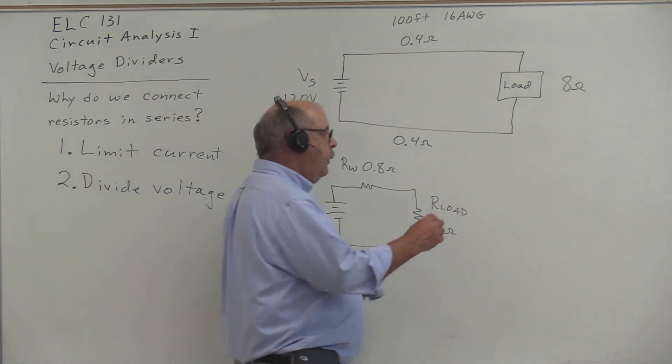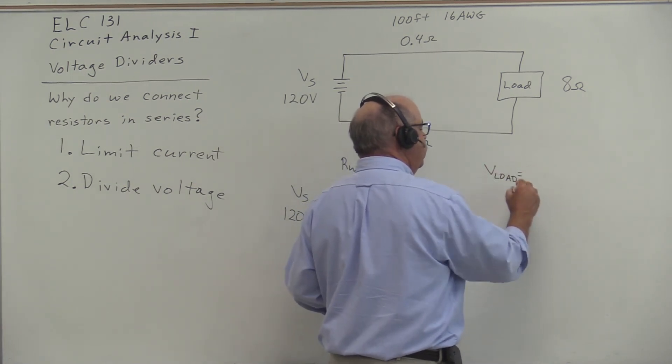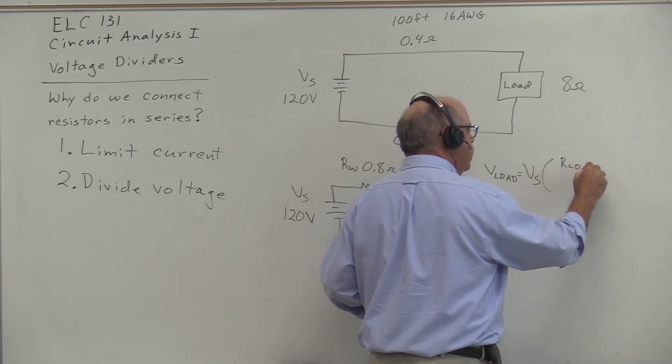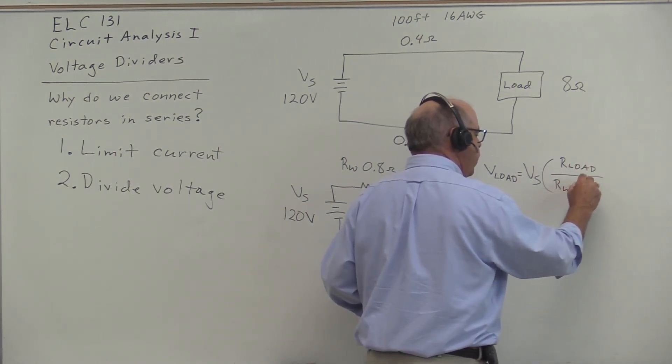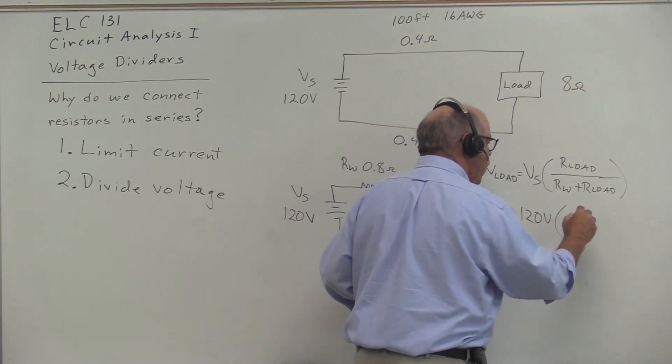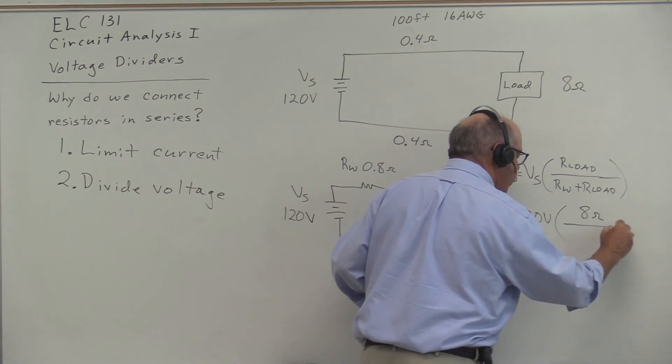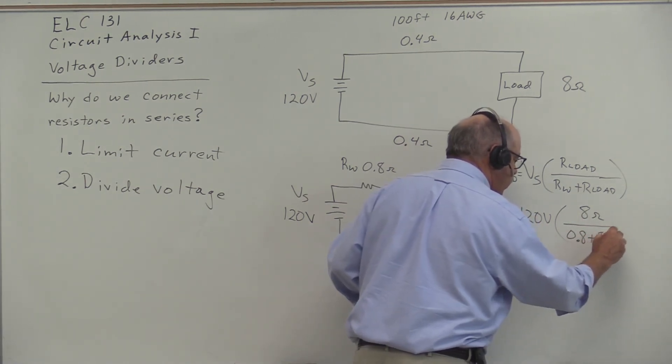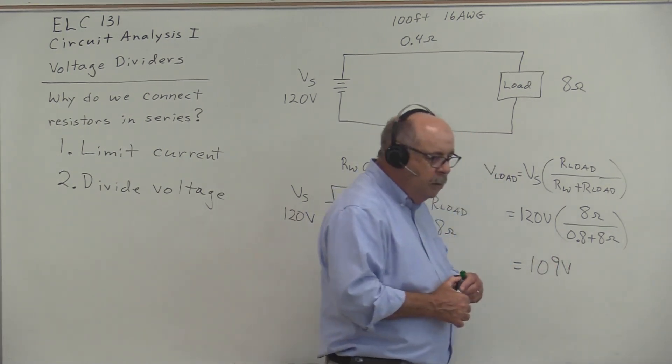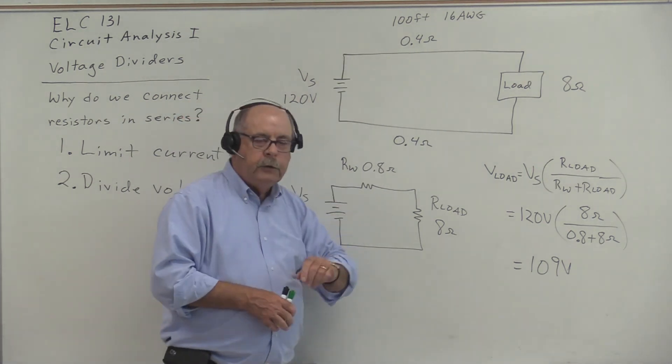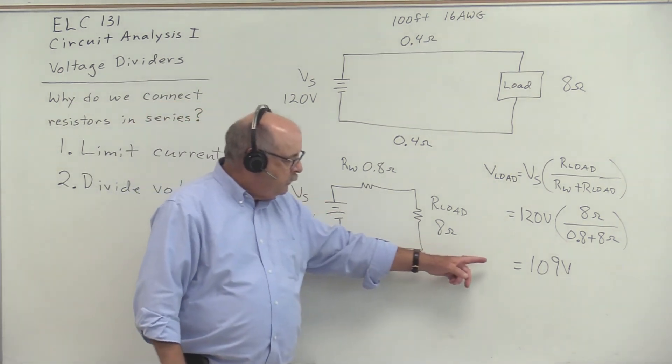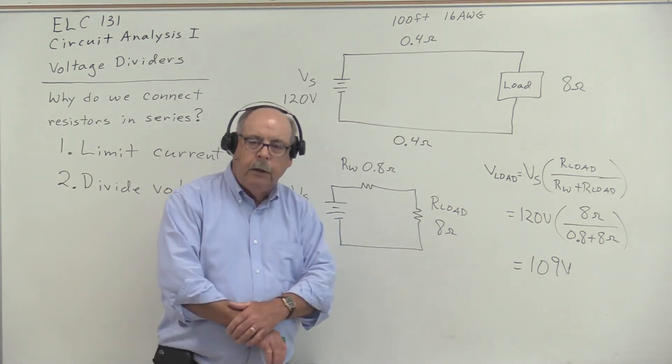The voltage available at the load can be calculated using the voltage divider formula, which is V_source times R_load divided by R_W plus R_load. 120 volts times 8 ohms divided by 0.8 ohms plus 8 ohms gives us approximately 109 volts. By connecting this 100 foot 16 gauge extension cord to the 8 ohm load, the voltage available at the load drops to 109 volts.